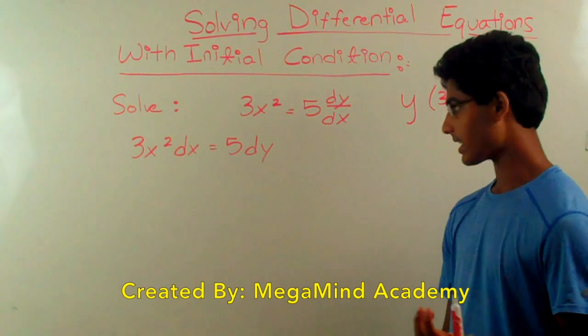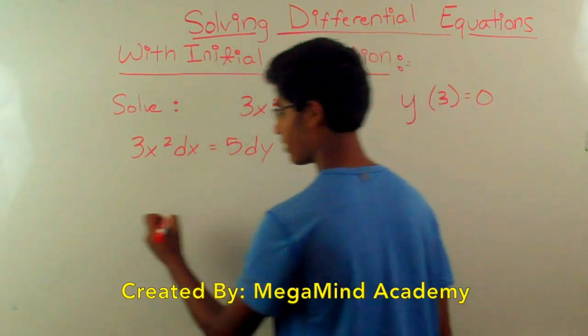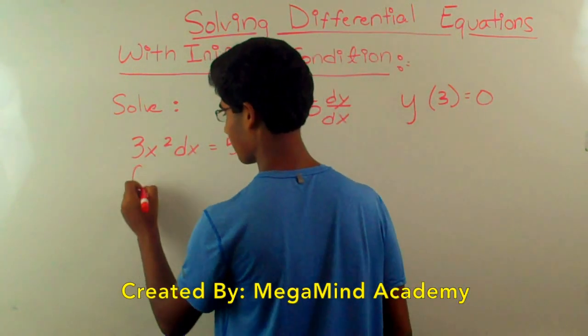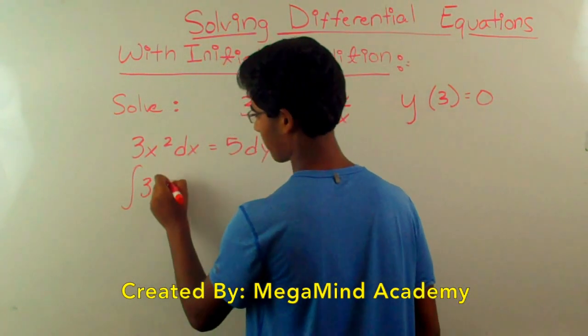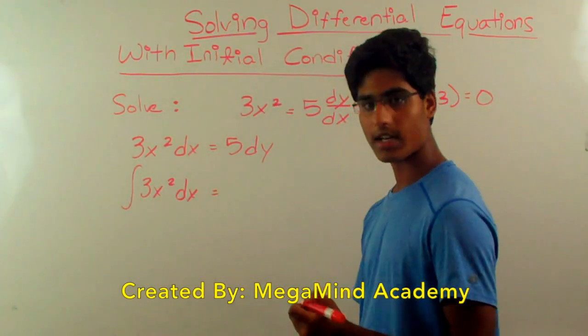So now what's the next step? Well, we know that we can take the integral of one side. So if we take the integral of the left side, integral of 3x squared dx, then that means we also have to take the integral of the right side.